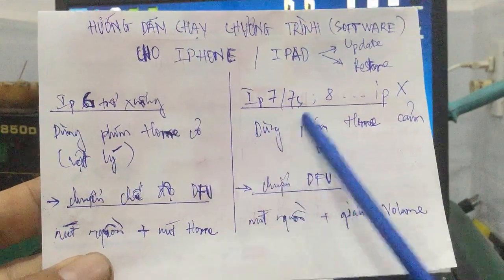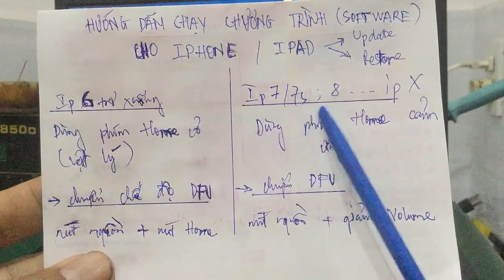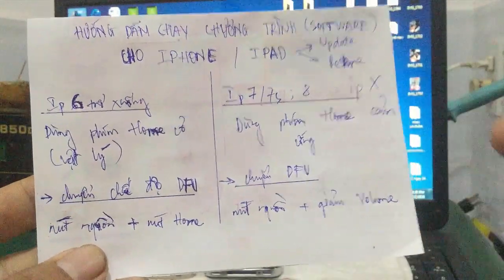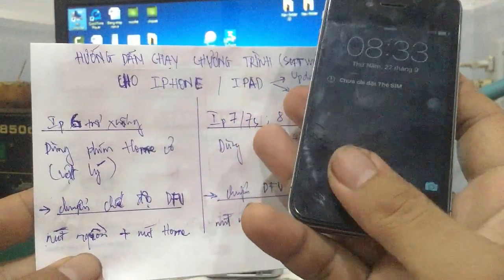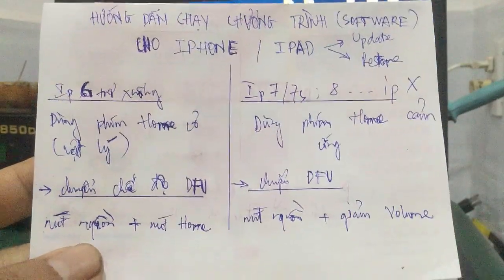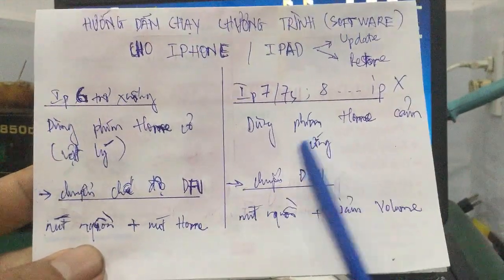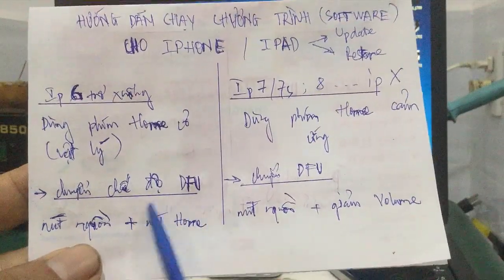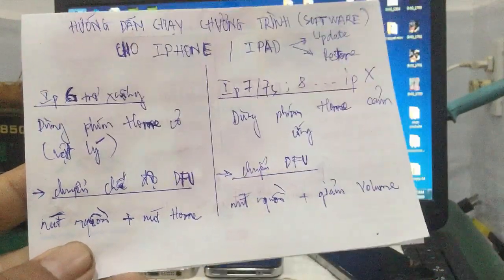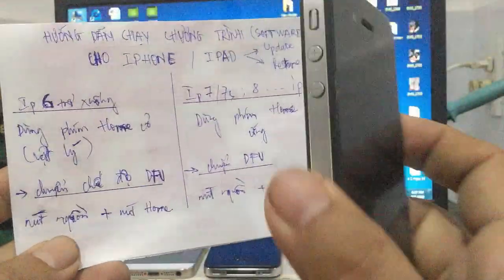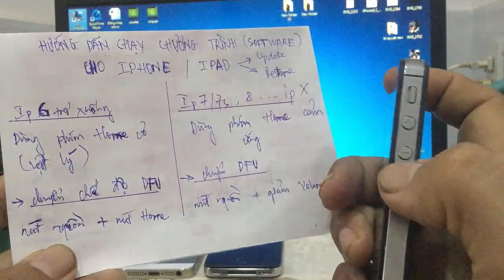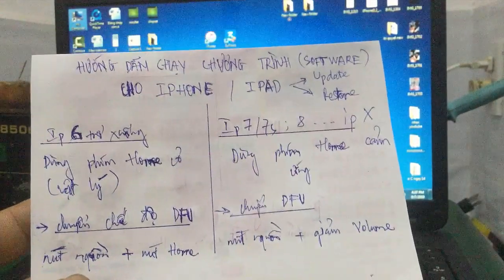Đối với các dòng đời mới như iPhone 7, 8 hoặc iPhone X, người ta dùng nút home cảm ứng - chạm tay vào có tác động. Trường hợp này, muốn chuyển vào chế độ DFU không sử dụng được nút home vì nó là cảm ứng. Thay vào đó kết hợp nút nguồn cộng với nút giảm volume để chuyển về chế độ DFU.